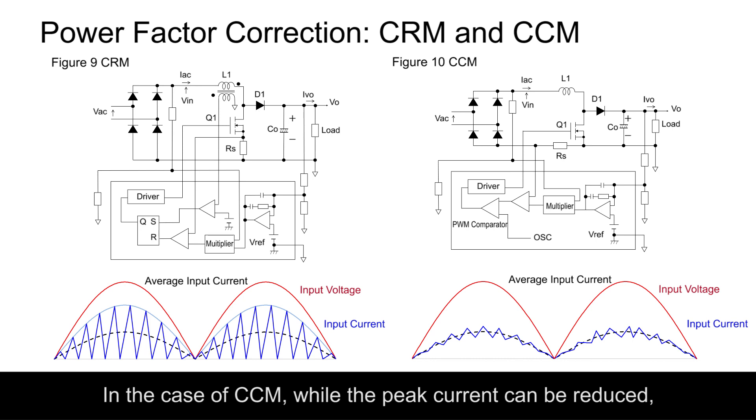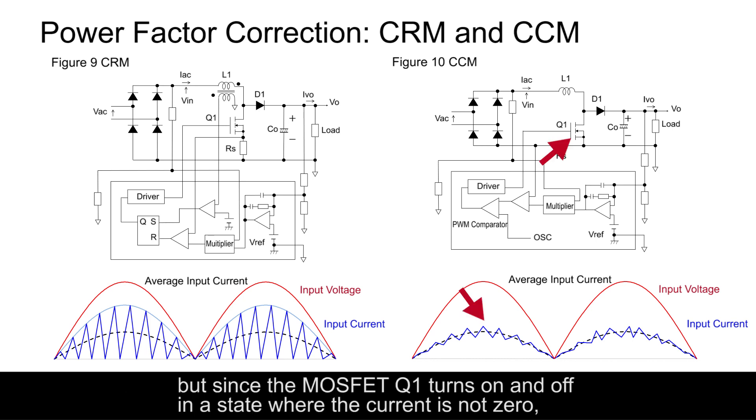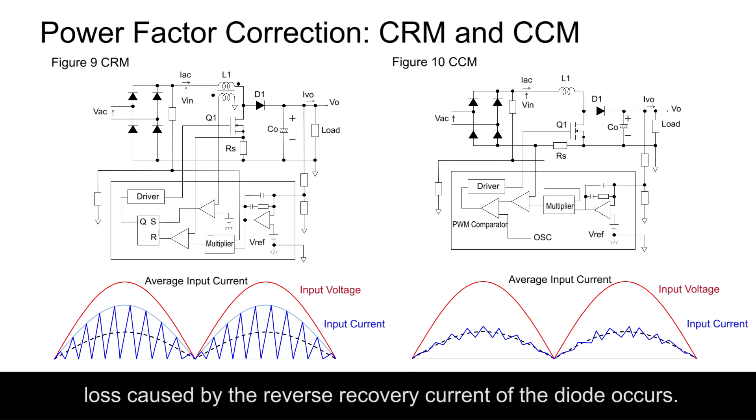In the case of CCM, while the peak current can be reduced, but since the MOSFET Q1 turns on and off in a state where the current is not zero, loss caused by the reverse recovery current of the diode occurs.